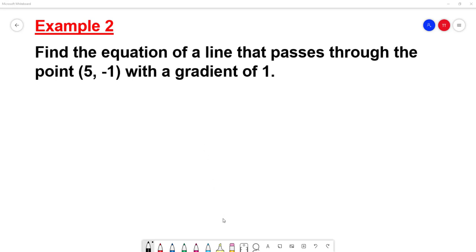So what we're going to do is, first of all, annotate this as X, annotate this as Y, and the gradient here is 1. So M = 1. So we can write M = 1, X = 5, and Y = -1.